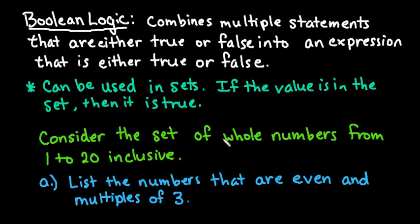We are going to, for the two examples that I have written down, consider the set of whole numbers from 1 to 20 inclusive. Inclusive means that it includes that value, so 1 and 20 are included in the data set. If it said exclusive, that means it would just be 2 to 19 and exclude 1 and 20.